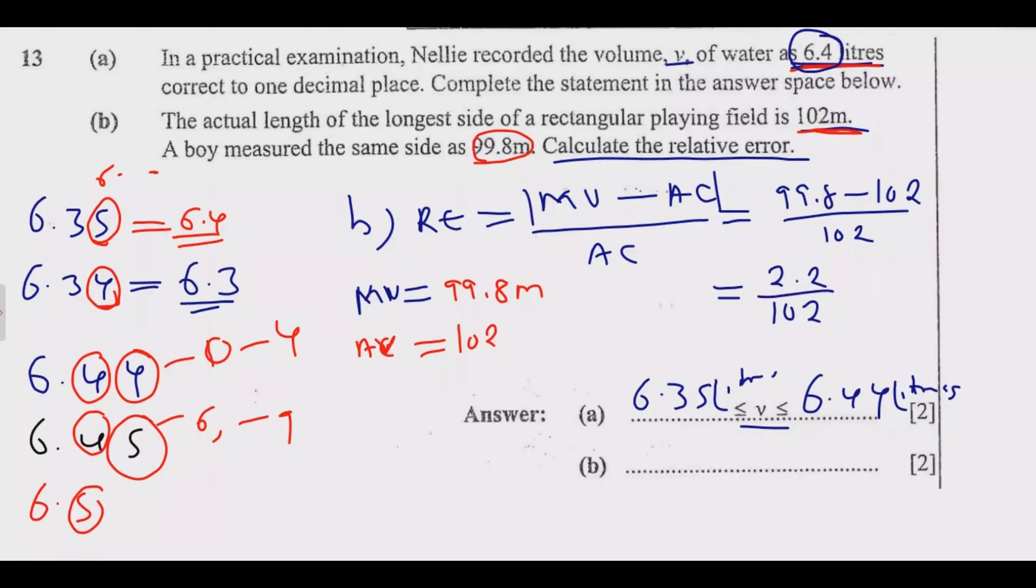Then afterward, we simplify these two to the lowest term. The first thing that we do is 2.2, because of space I'll close this one, but in the exam don't close this one. Multiply by 10, so that it becomes 22. We are getting rid of decimal places. There's something that we do on top, we do it down. 102 times 10. Relative error is equal to 2.2 multiply by 10 over 102 multiply by 10. 2.2 times 10, it will give me 22 over 1020.